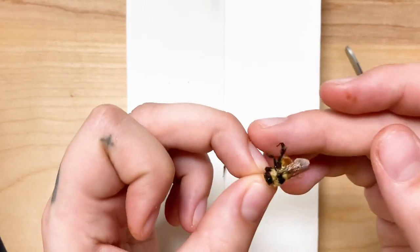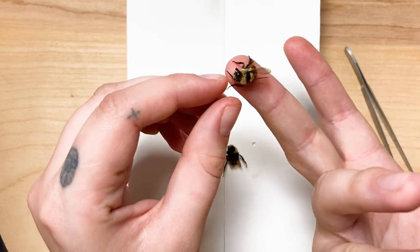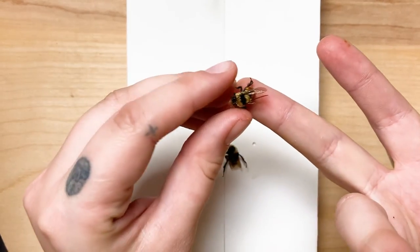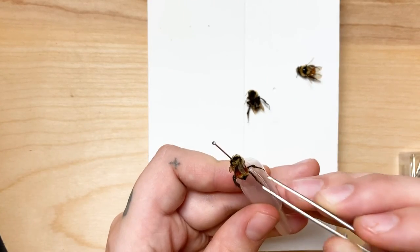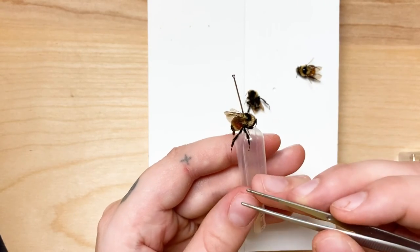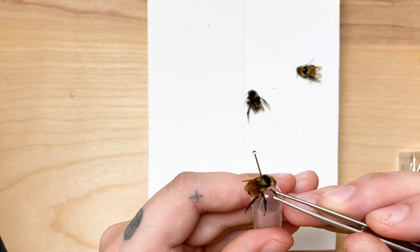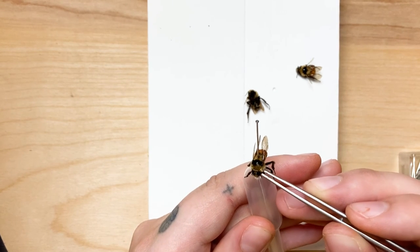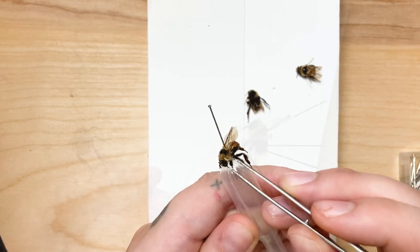I've never really handled or pinned bees before, so I'll be doing a little bit of playing around just to see what works. I wanted to pin these on a curved surface, so I found some pipettes in our back room. Here we go. I'm just going to see what positions look most natural for these bees and hopefully I can pin them in a way that they can stay there.